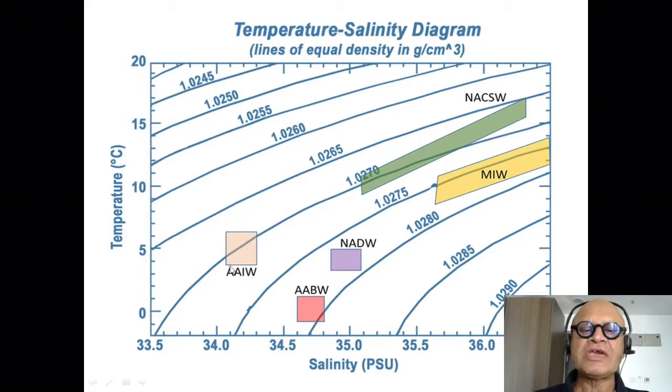In the context of thermohaline circulation, then we can start by looking at the typical water masses that are formed that produce the thermohaline circulation. So here you have the Antarctic intermediate water on this density surface around this density contour of 1.027 gram per centimeter cube or 27 sigma. Antarctic bottom water of course sits here as the heaviest water, although not as salty as the North Atlantic deep water, which is warmer and saltier.